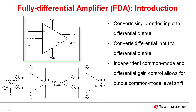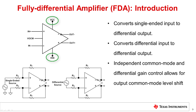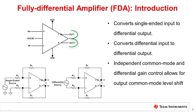This figure shows the standard pin connections on a fully differential amplifier, or FDA. There are two power supply pins, as well as two input pins, like a standard single-ended op-amp. An FDA has two differential output pins, which produce the complementary outputs. The VOCM pin controls a secondary loop internal to the amplifier and sets the DC output common mode voltage of the FDA.